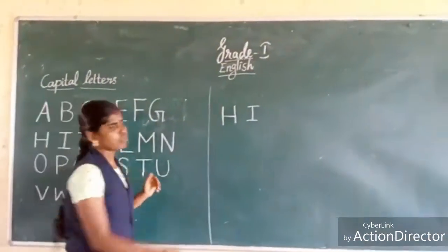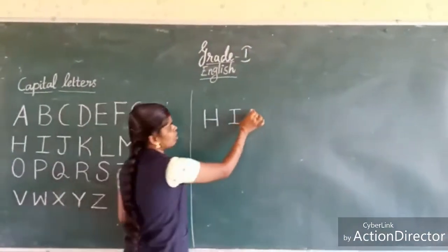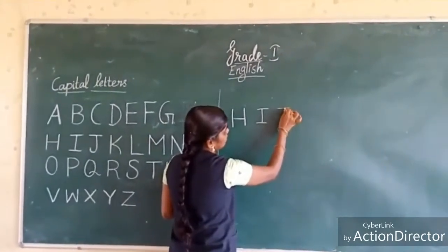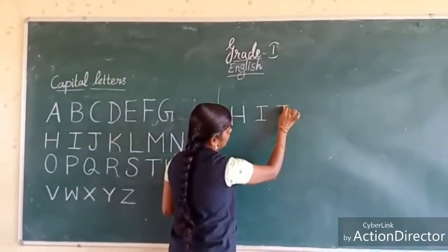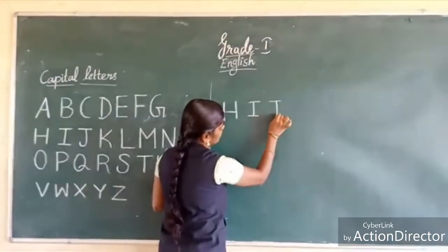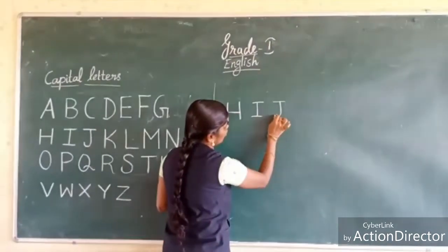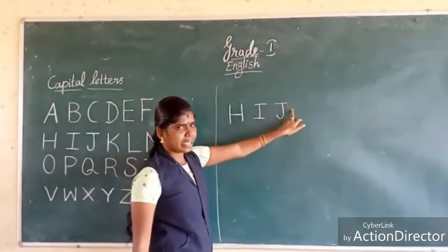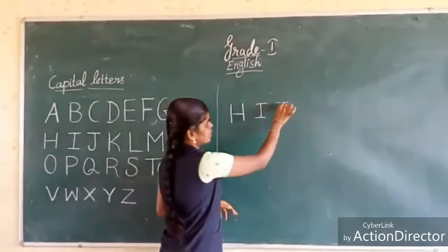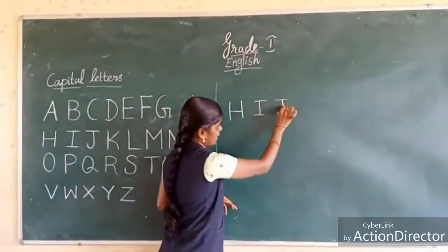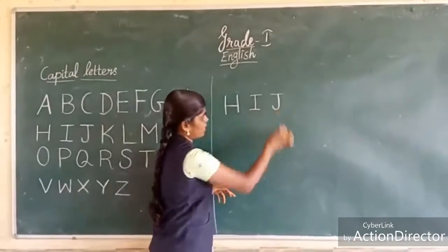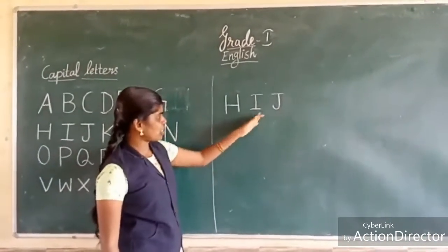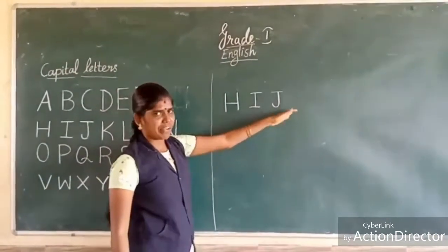Next, J. How do I write J? One sleeping line at the top, one standing line going down, then a curve at the bottom. This is J.